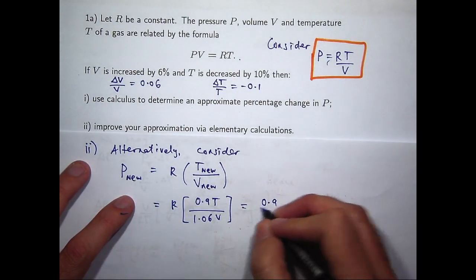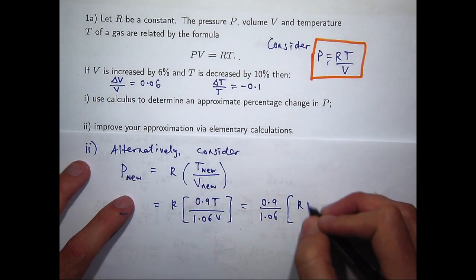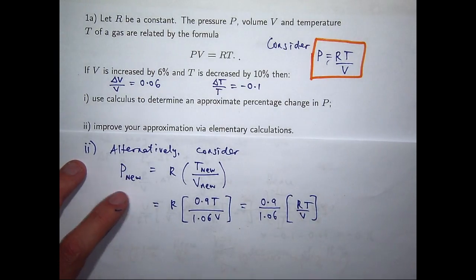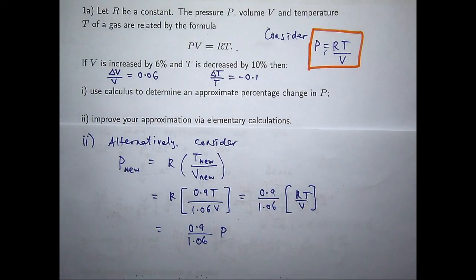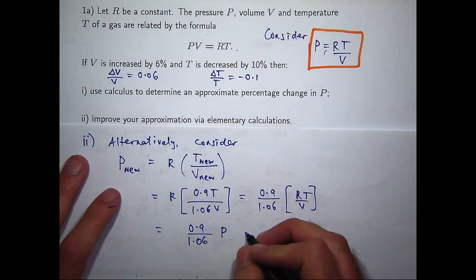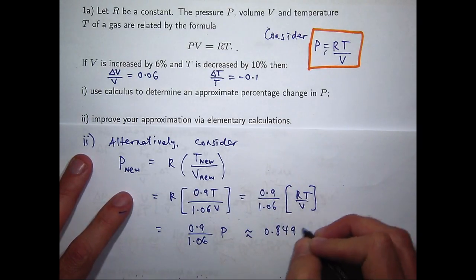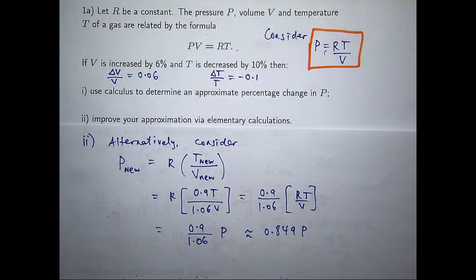Doing a little bit of algebra, we get P new equals (0.9 / 1.06) times RT over V. And RT over V is just P, the original pressure. So to work out the new pressure, all I need to do is simplify this fraction. Using a calculator gives approximately 0.849 times p, which we can round to about 0.85. So we've come up with a better approximation — the change in the pressure will be approximately 15 percent.